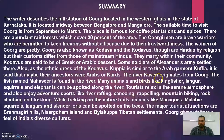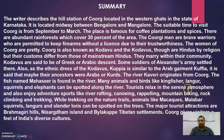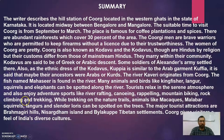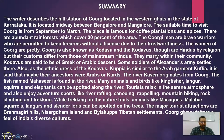The river Kaveri originates from Coorg. The fish named Mahaseer is found in the river. Many animals and birds like kingfisher, langur, squirrel, and elephants can be spotted along the river. Tourists relax in the serene atmosphere and enjoy adventure sports like river rafting, canoeing, rappelling, mountain biking, rock climbing, and trekking. Major tourist attractions include Brahmagiri hills, Nisargadhama island, and Bylakuppe Tibetan settlement. Coorg gives visitors a feel of India's diversified nature.